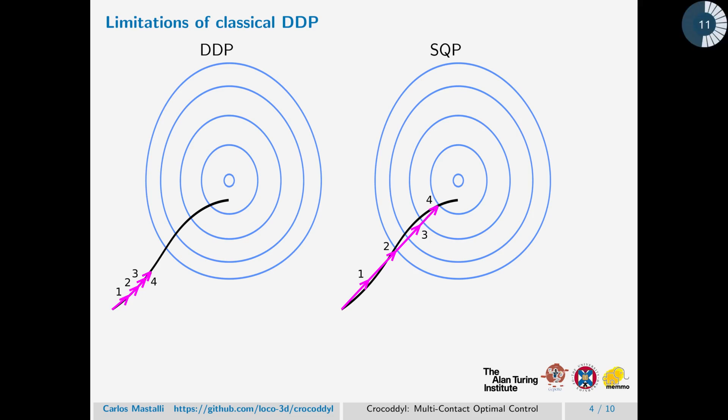On the other hand, the DDP algorithm moves along the black curve, and this is due to a non-linear rollout of the dynamics. But the consequence of trying this direction is that we often need to require to set a smaller step length, and this is due to the non-linearity of the system.